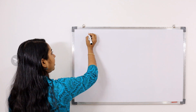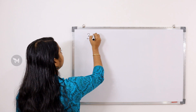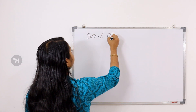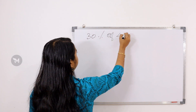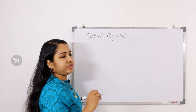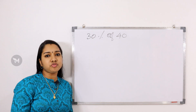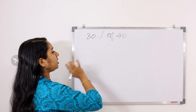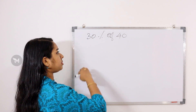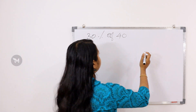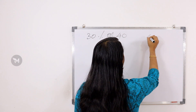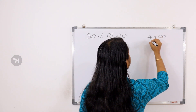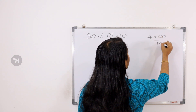First one: we have to find 30% of 40. So what do we do? We calculate 40 x 30 by 100.